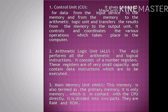Number two: arithmetic logic unit, in short ALU. The ALU performs all the arithmetic and logical instructions. It consists of a number of registers. These registers are of very small capacity and contain data instructions which are to be executed. Number three: main memory unit, in short MMU. This memory is also termed as the primary memory. It is the only memory which is in direct contact with the CPU. It is divided into two parts: RAM and ROM.